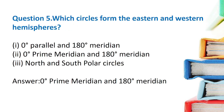Question 5: Which circles form the eastern and western hemispheres? First option: 0 degree parallel and 180 degree meridian. Second option: 0 degree prime meridian and 180 degree meridian. Third option: north and south polar circles. The answer is the 0 degree prime meridian and 180 degree meridian.